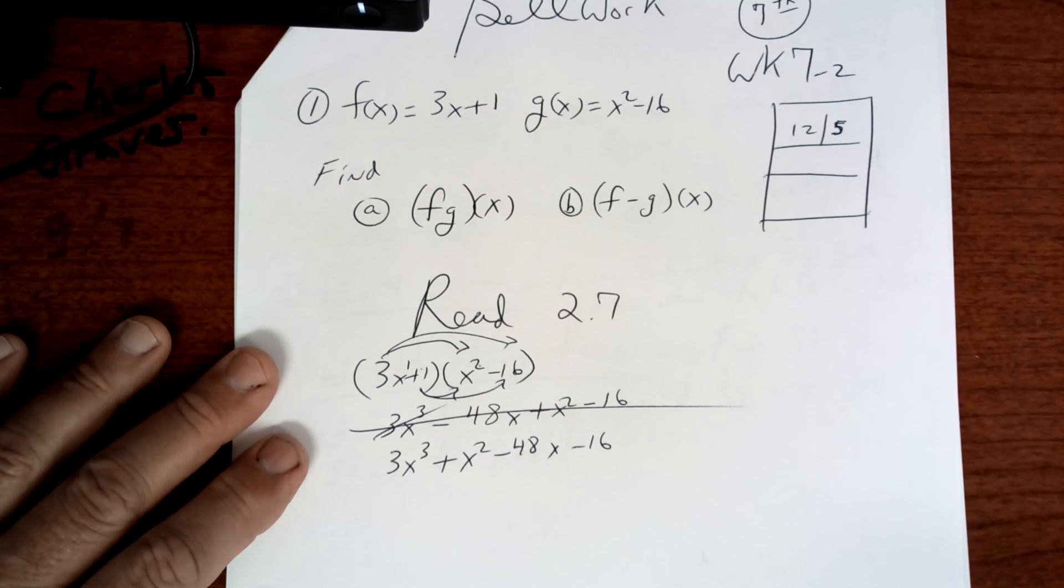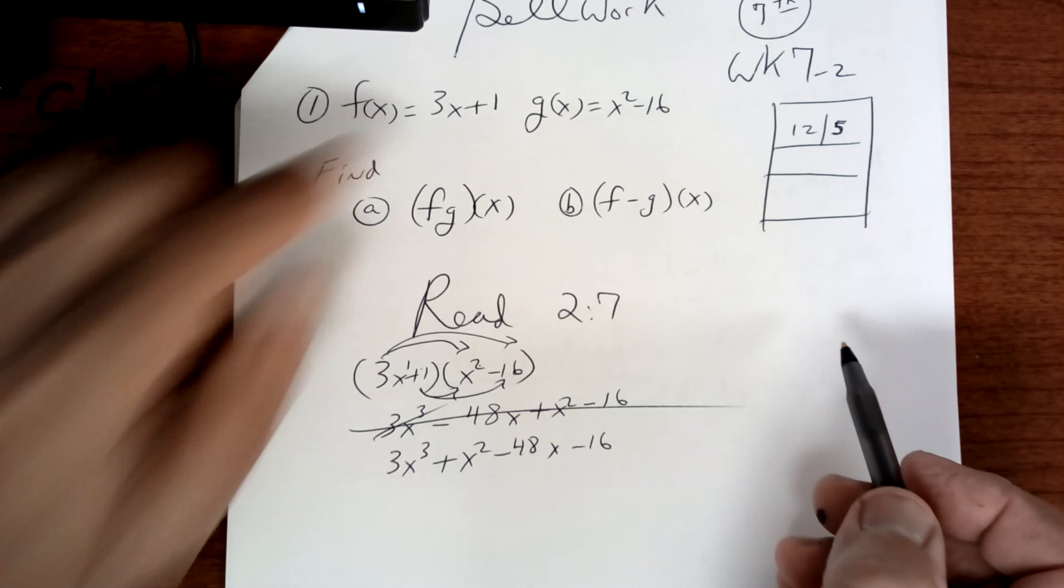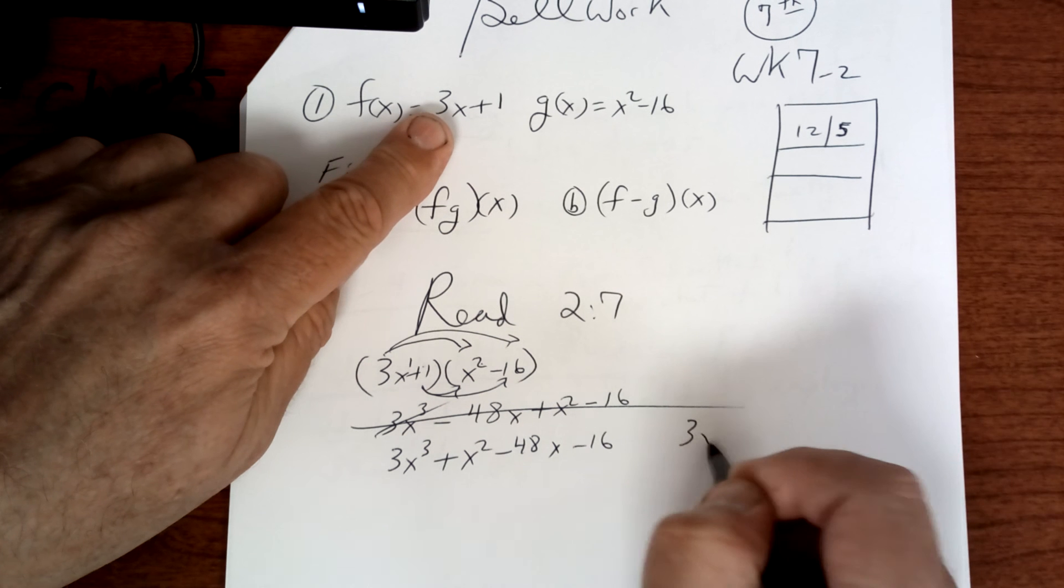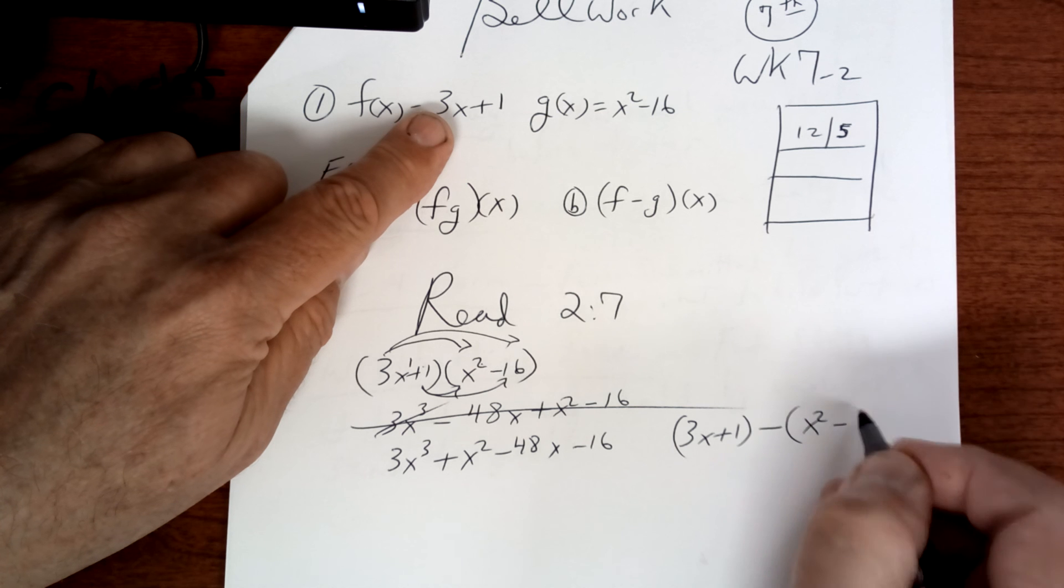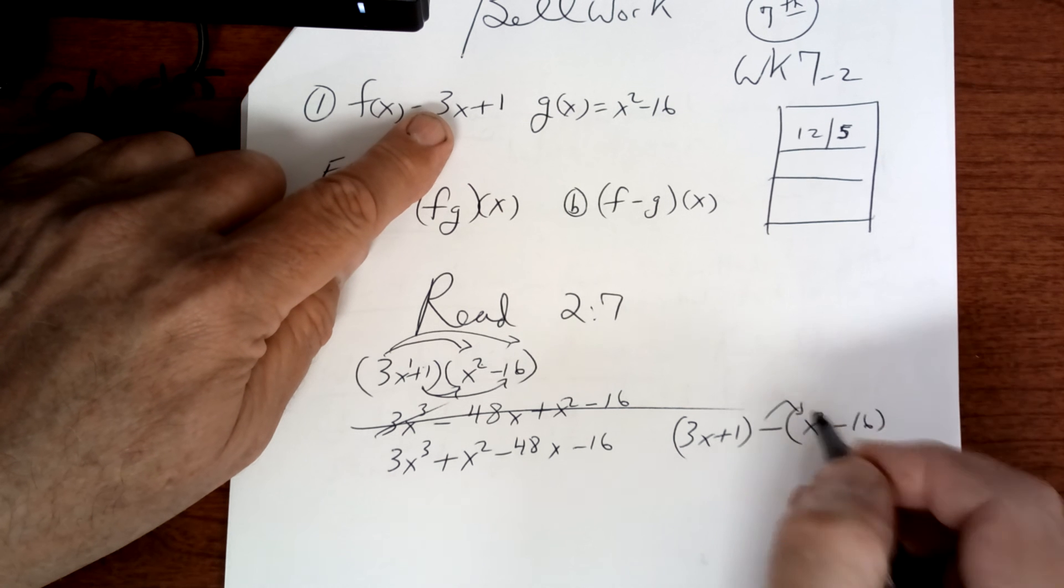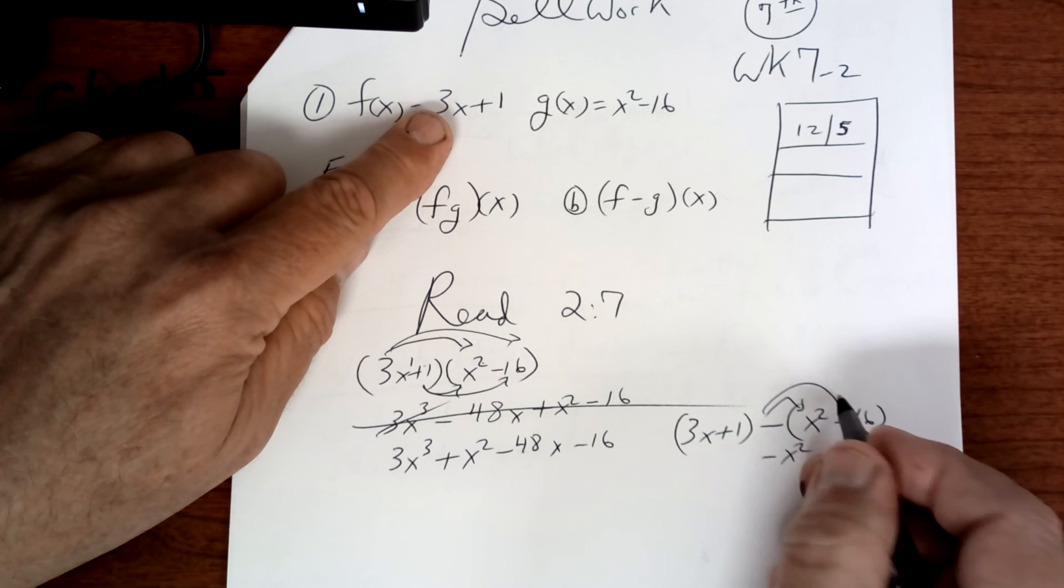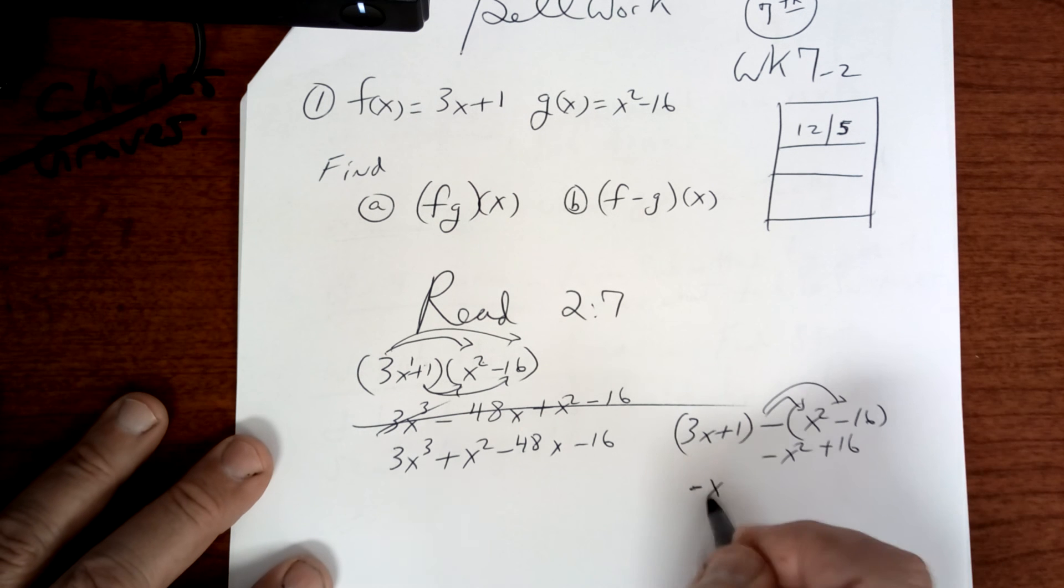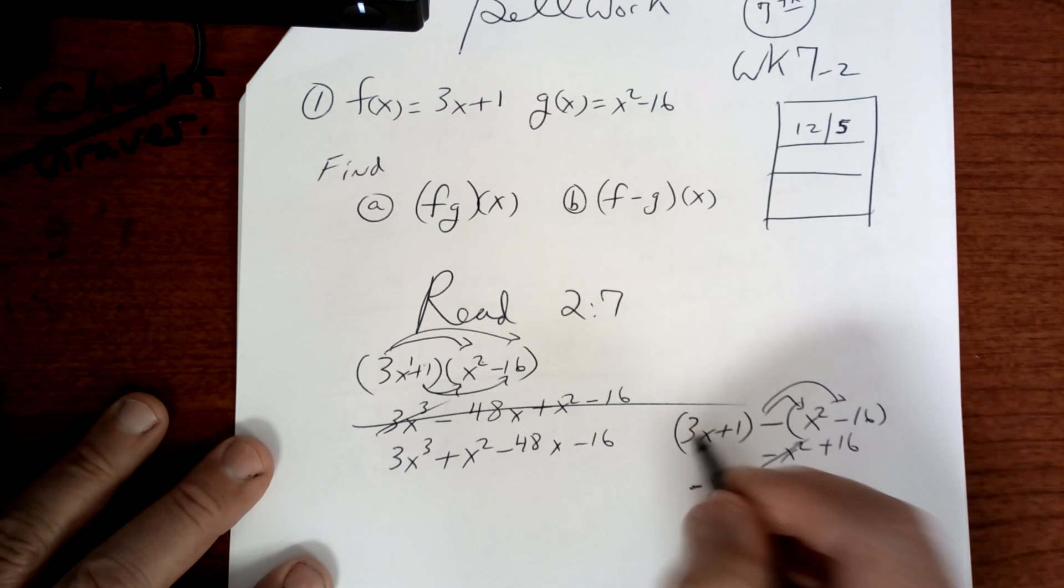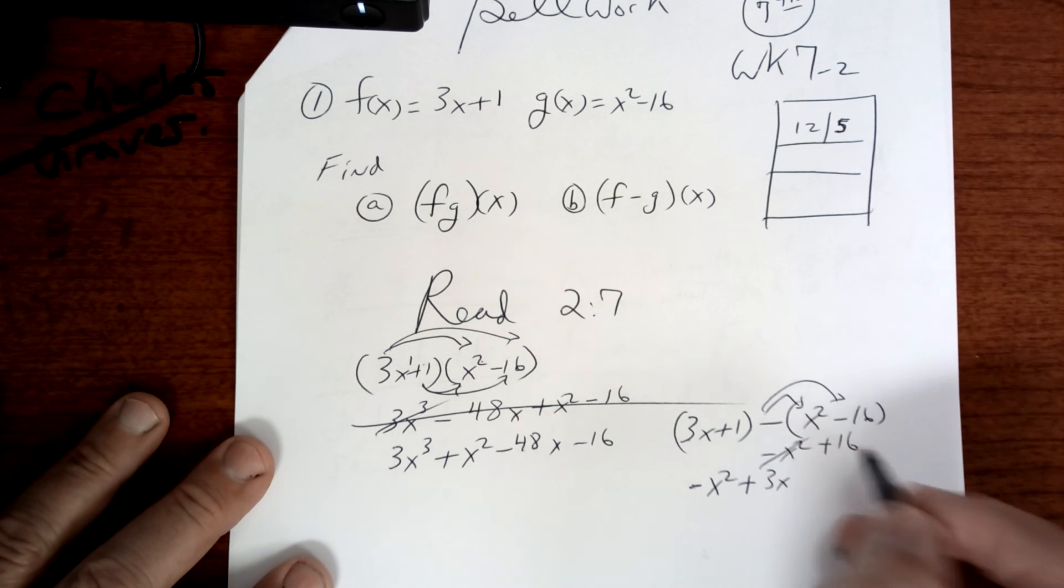This one right here is subtraction. So, you're going to take 3x plus 1 minus all of this. Make sure you put parentheses because that's going to change to a negative. And this one's going to change to a positive. And so, when you combine like terms, you're going to get negative x squared plus 3x plus 17.